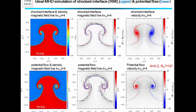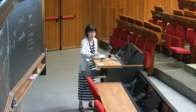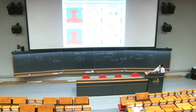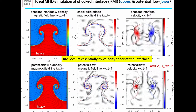Before discussing the result of the sheet model, we mention the comparison between ideal MHD simulations, shocked interface, and potential flow simulations. The upper three figures show the result of ideal MHD simulations of the shocked interface, and the lower three figures show the result of the potential flow model. These are very similar, and we can conclude that MHD Richtmyer-Meshkov instability occurs essentially by velocity shear at the interface. Taking into account these results, we proceed to the result of the current vortex sheet model.